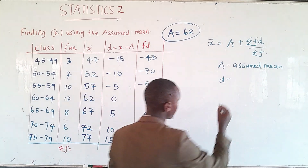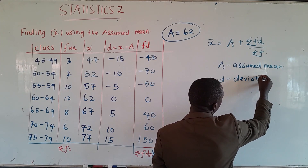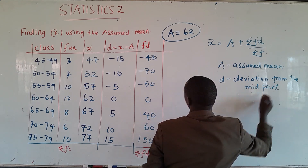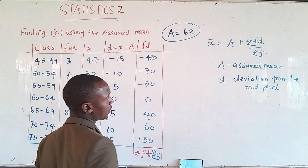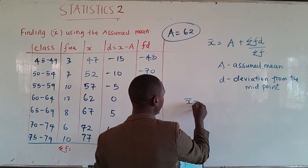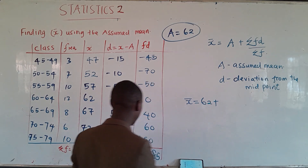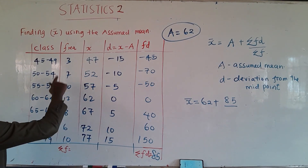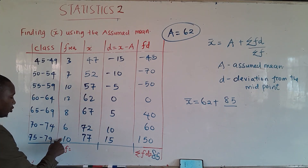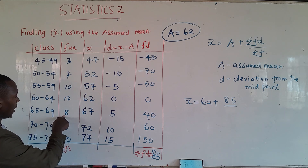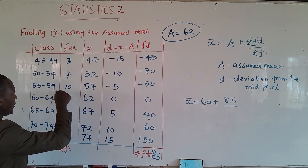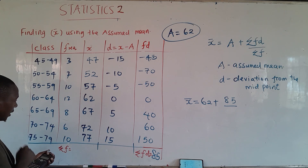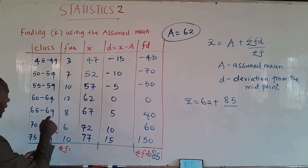We have filled our table and are ready to work out the mean. Remember, d was the deviation from the midpoints. To work out the mean, we take the assumed mean a = 62 and add the summation of fd (which is 85) divided by the summation of f. We need to add up the frequencies: 10 + 6 + 10 + 12 + 8 + 6 + ... giving a total summation of f = 56.